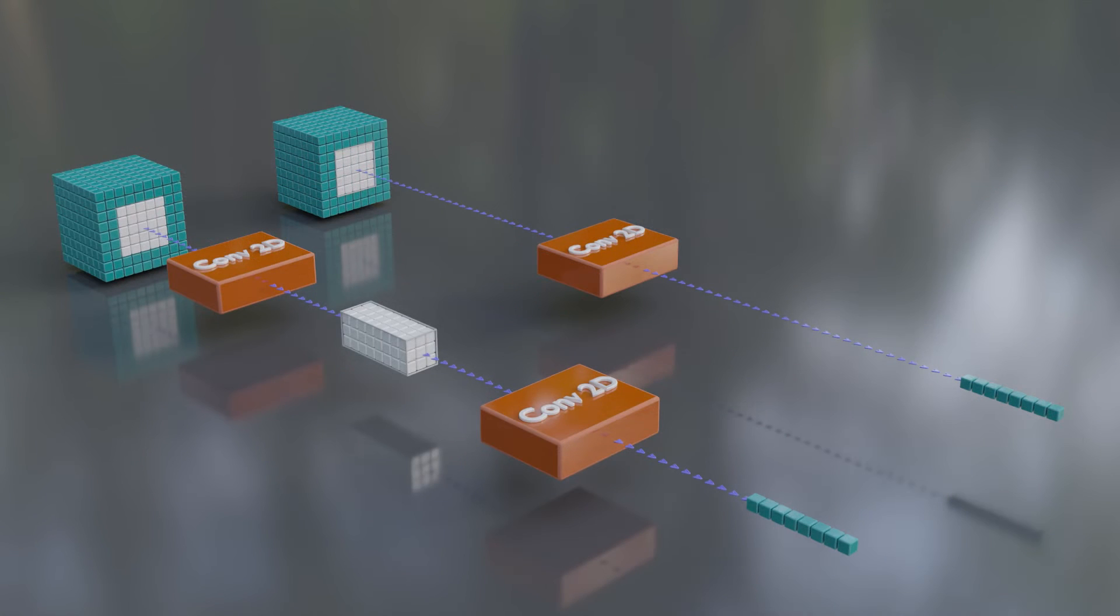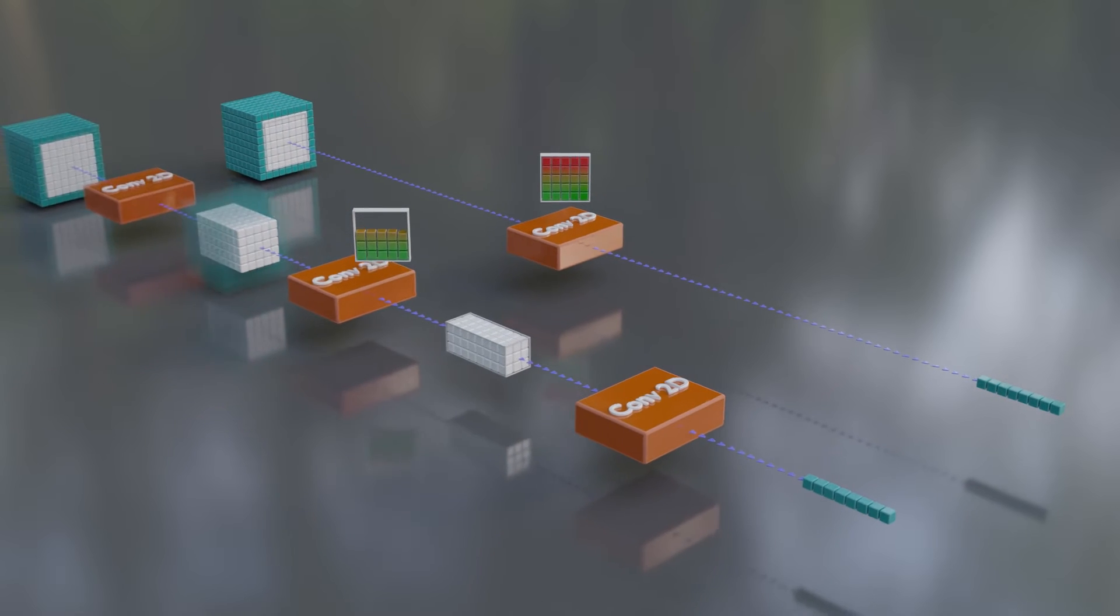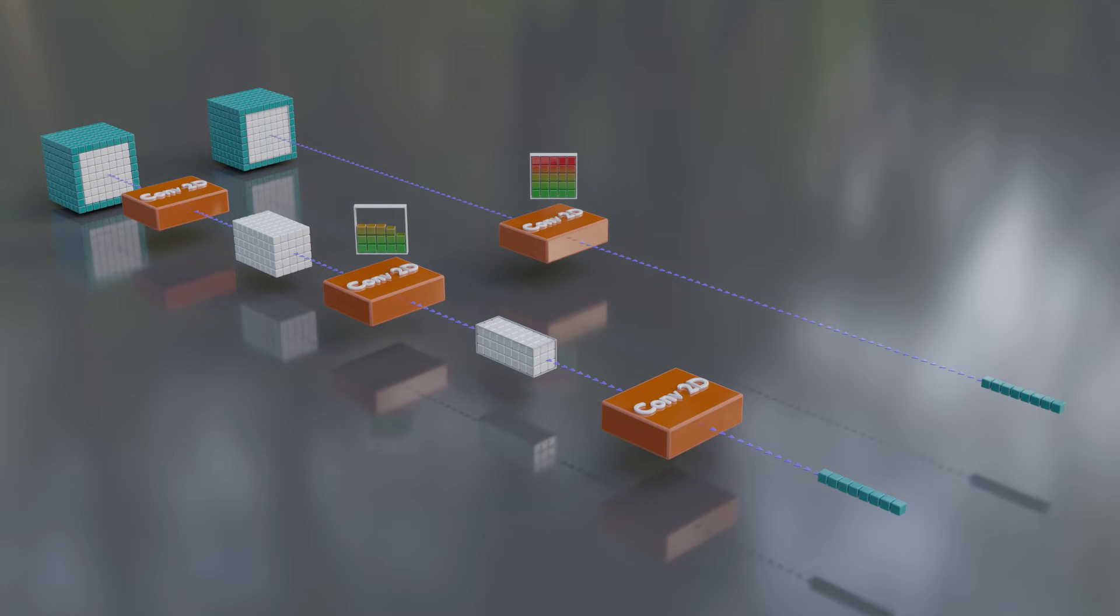Two 3 by 3 convolutions only use 72% of the parameters in computation as a single 5 by 5. And three 3 by 3 convolutions use only 55% of the resources of a single 7 by 7.